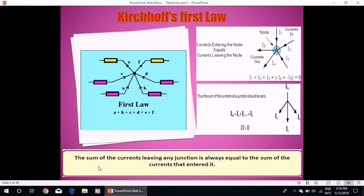Kirchhoff's first law: The sum of the currents leaving any junction is always equal to the sum of currents that entered it. In these diagrams, you can see that this is a node and currents flowing towards the node, they are labeled as A, B, C, and D. And currents leaving this node are represented by letter E and F. So, according to Kirchhoff's first law, A plus B plus C plus D must be equal to E plus F.